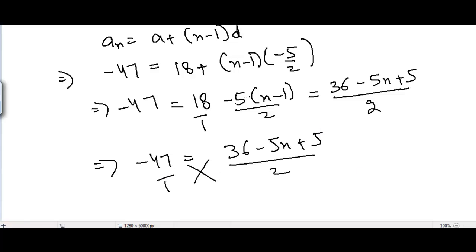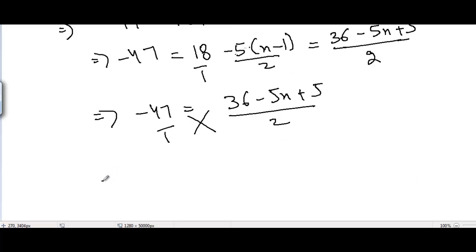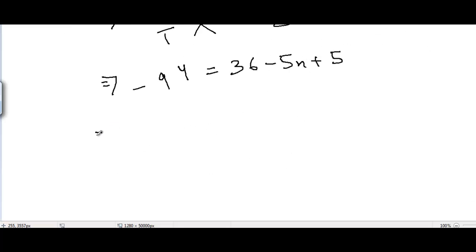Now I can cross multiply, and -47 × 2 is -94 here, equals 36 - 5n + 5. And I get here - 5n can be taken to the other side and all the rest of the terms can be taken on one side. So 5n = 36 + 5 + 94.